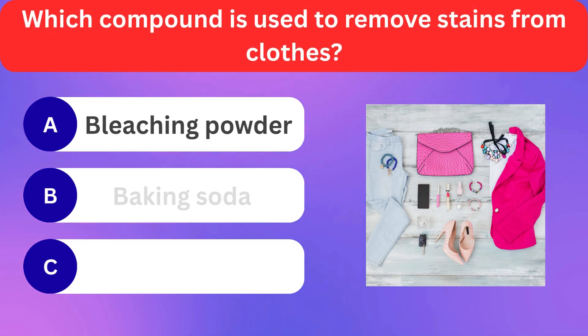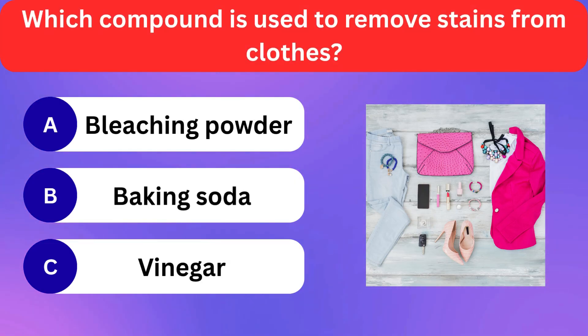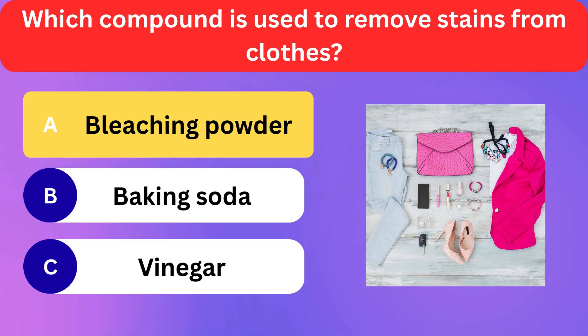Which compound is used to remove stains from clothes? Bleaching powder, Baking soda, Vinegar. Correct answer is bleaching powder.